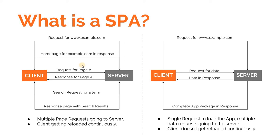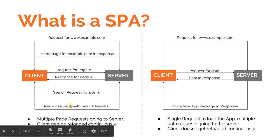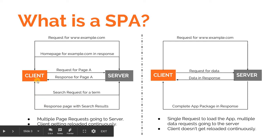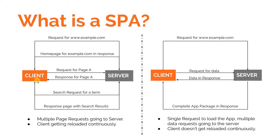Now say if there is a search bar on page A, wherein the user types in a query or search term and presses enter. Another request would go to the server to get the search results for the query the user has typed in, and the server would respond back with a new page containing all the search results for that particular query. So are you seeing a pattern here? For each and every action the user is performing, a new request is going to the server.